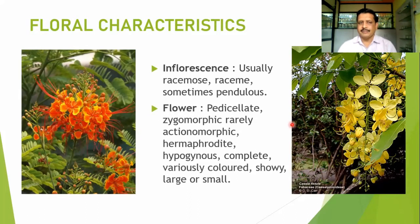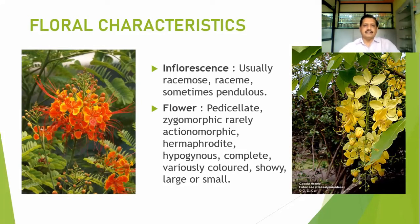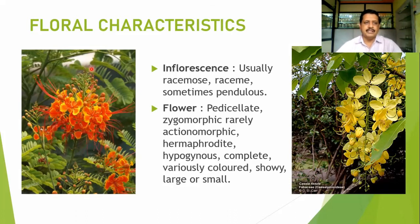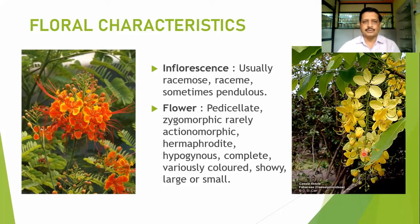Inflorescences are usually racemose type — either erect and growing vertically upwards, or pendulous as in Cassia fistula. In both cases they are in racemose fashion, where the terminal flowers are younger and older flowers are at the base, with continuously growing apex. That is why it is also called an indeterminate type of inflorescence. This racemose type can be vertically growing or pendulous as in Cassia fistula.